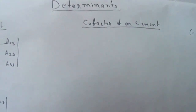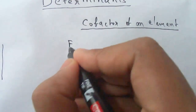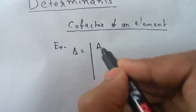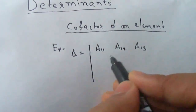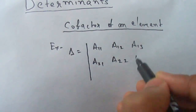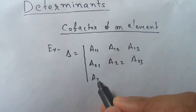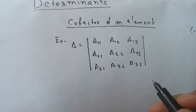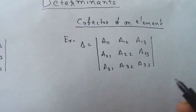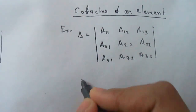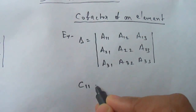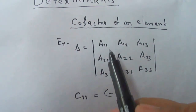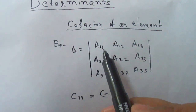Let me explain it with an example using the same determinant. Suppose we are calculating the cofactor of a11. The symbol is c11. We write (−1)^(i+j), and for a11 the position is i = 1, j = 1, so the exponent is 1 + 1.